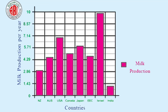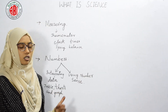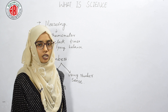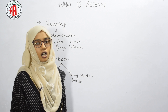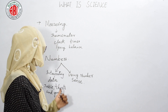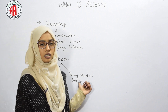Look at this graph given in your reader. By looking at this graph, we can easily observe that it displays milk production per year in different countries. By using tables, charts, and graphs, we can easily interpret the data shown by these methods.